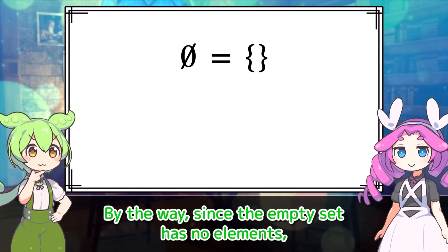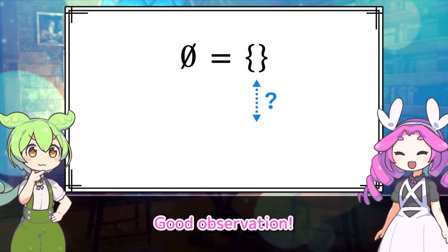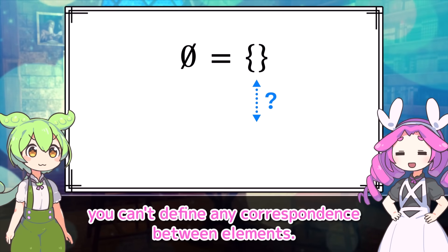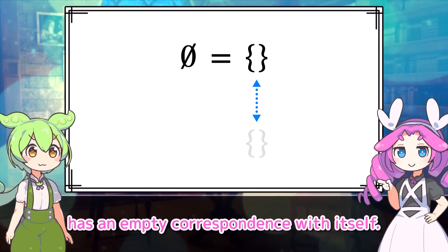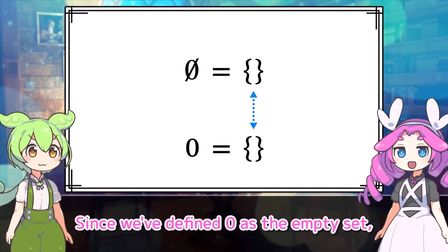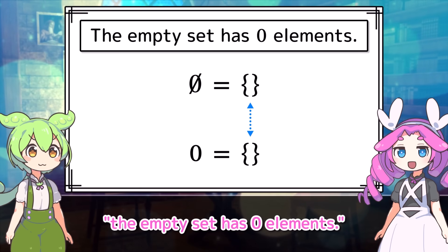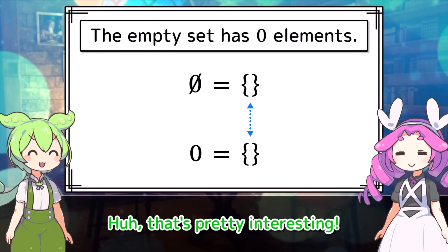By the way, since the empty set has no elements, does that mean we can't even consider a correspondence involving it? Good observation. You're right. With the empty set, you can't define any correspondence between elements. But for convenience, let's assume the empty set has an empty correspondence with itself. Since we've defined zero as the empty set, we can now say the empty set has zero elements. Well, it might be clearer to say the number of elements is zero. That's pretty interesting.